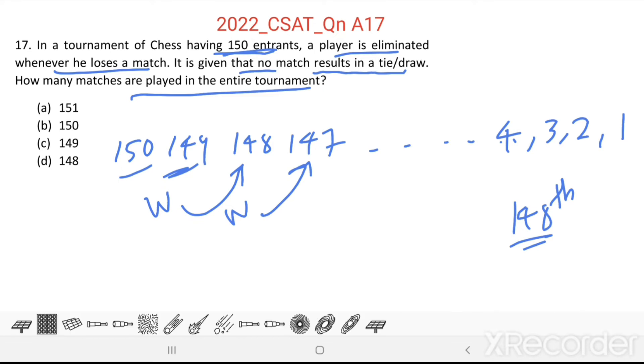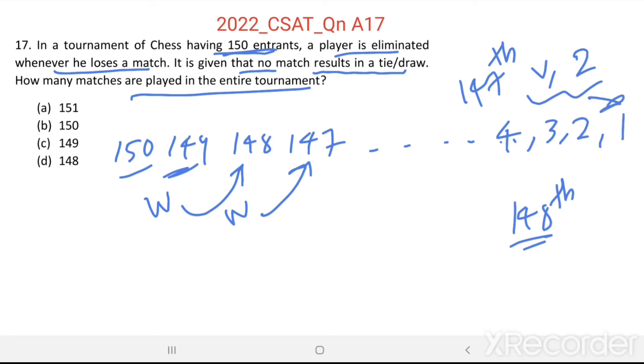So the 148th match will be between the second seed versus winner of the 147th match. So this winner will play with the first seed in the 149th match.